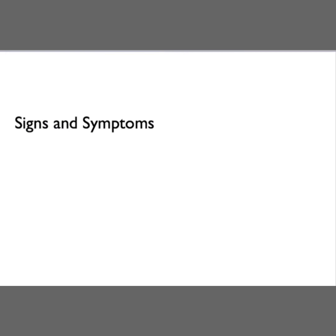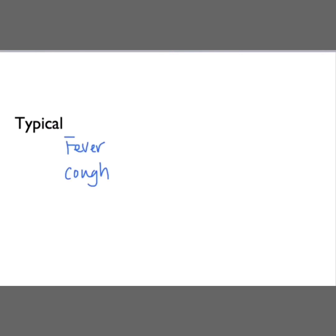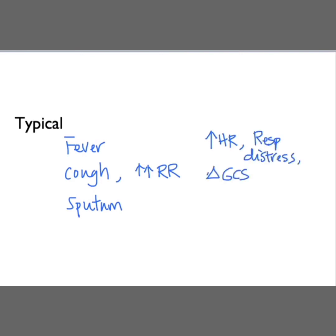How do patients with pneumonia present? We will divide this into typical and atypical presentation. In patients with typical pneumonia, they will present with fever, cough, tachypnea, and sputum production. On exam, they are usually tachycardic and may be in respiratory distress, and might be confused. On your respiratory exam, you may hear adventitious sounds such as crackles, rales, rhonchi, or wheezes. There might be decreased breath sounds and dullness to percussion. If there is a pleural effusion, you may also hear a pleural friction rub.